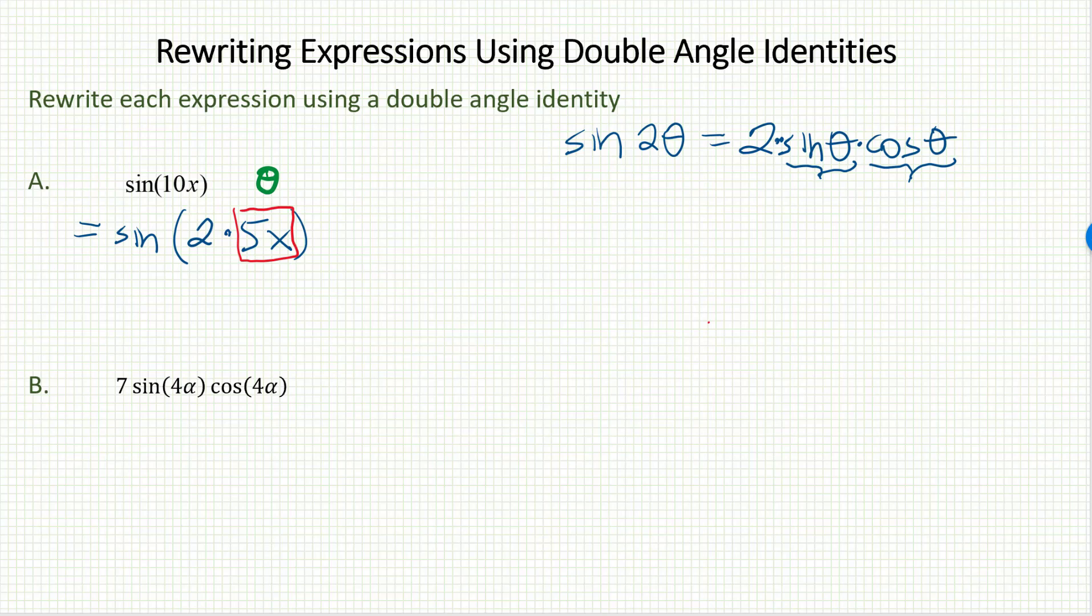To rewrite this then, I just need to carefully follow the right side of that identity. It says 2 times sine θ. Again, our θ is 5x. Times cosine θ. Again, our θ is 5x. And we're done. We've rewritten the original expression using the double angle identity.